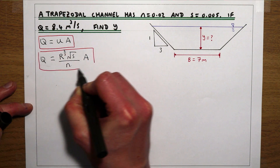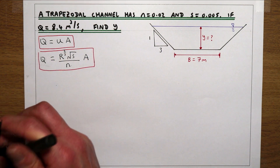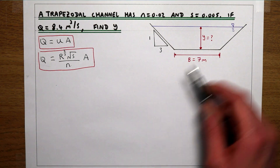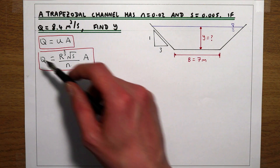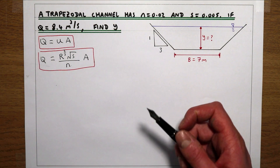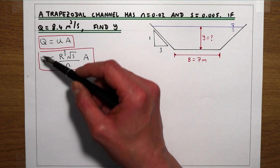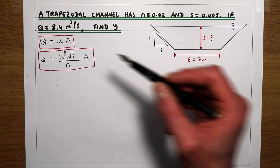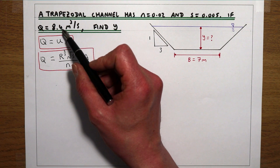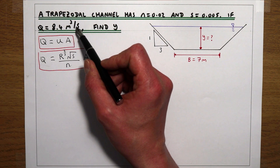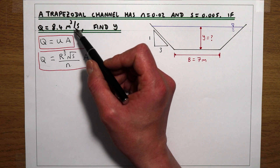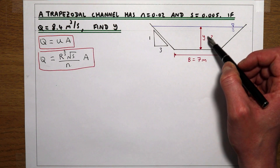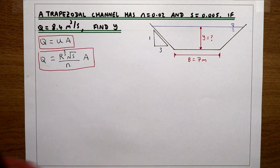In the previous video we were working out Q for a given set of channel properties where Y was given and we found Q. In this example we're told what Q is — 8.4 metres cubed per second — and we're trying to work back to find out what Y is.